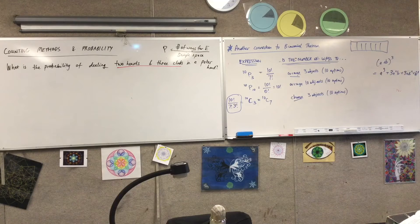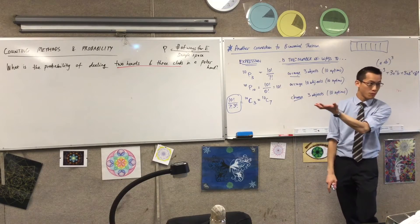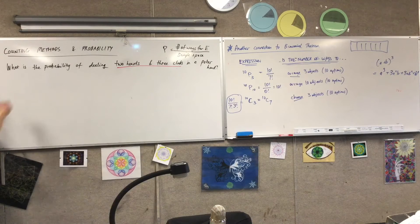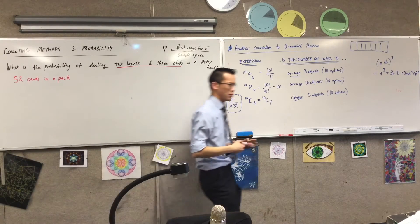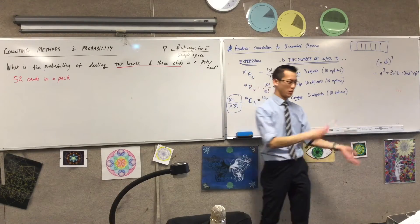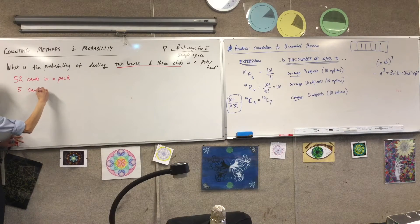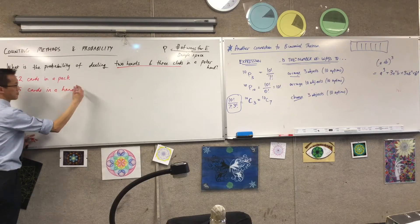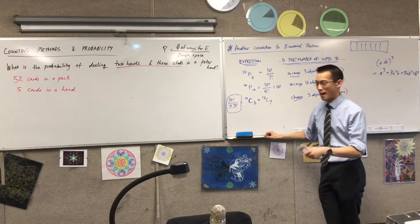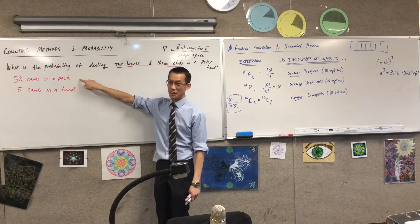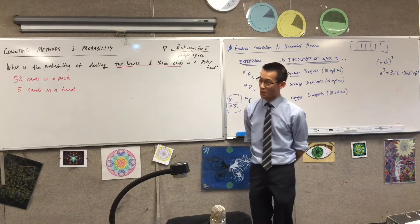Let's start with the easy part of the question first. The sample space — that's just no restrictions, no conditions. You've got how many cards in a pack? You've got 52. A hand, whether it's poker or anything else, is five cards. That's why we call it a hand. They very likely will not tell you how many cards there are in a pack — they'll expect you to know. There are four suits, and they're not going to tell you that either.